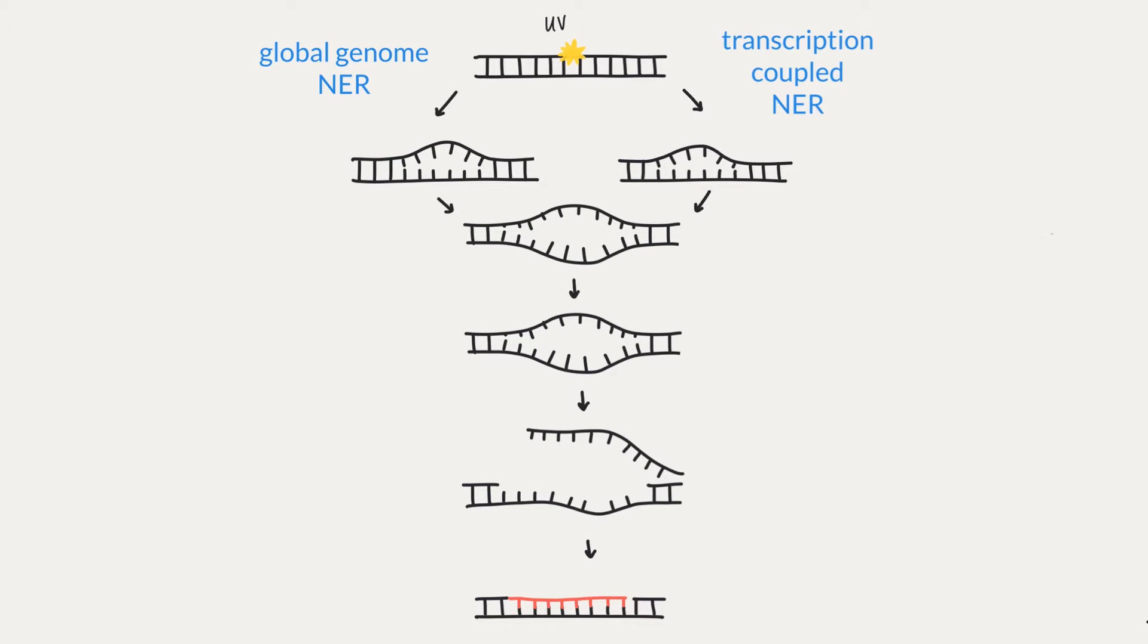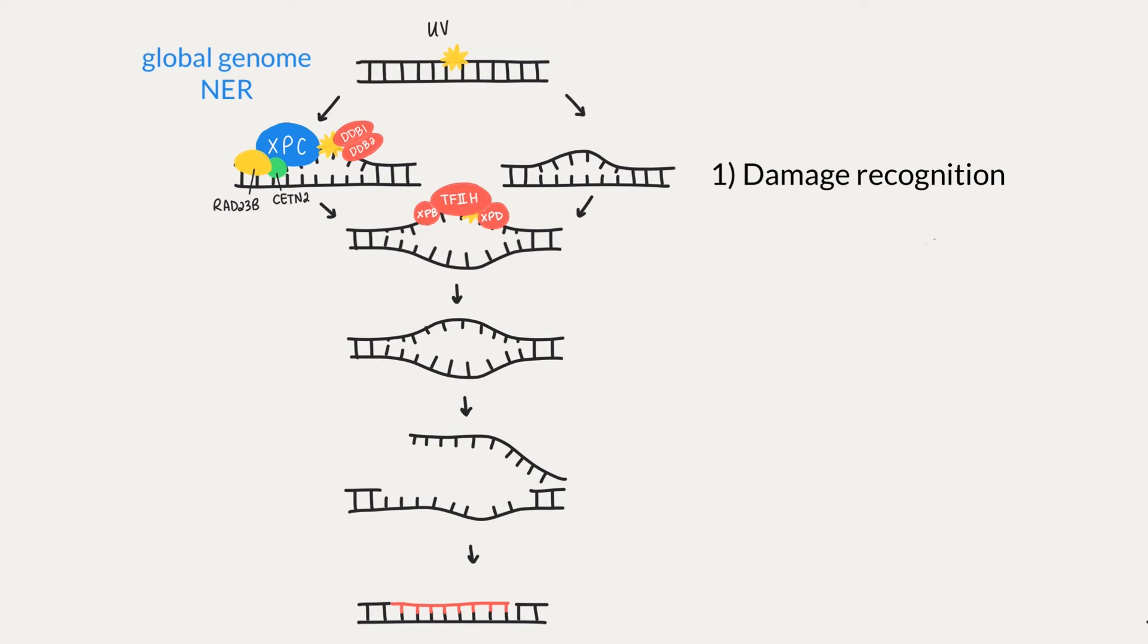In nucleotide excision repair, there are two sub-pathways: global genome repair and transcription-coupled repair. The difference between them is how they recognize the damage during the first step, but after that they have the same process for incision, repair and ligation. So, the first step is damage recognition and this is where the two sub-pathways differ.